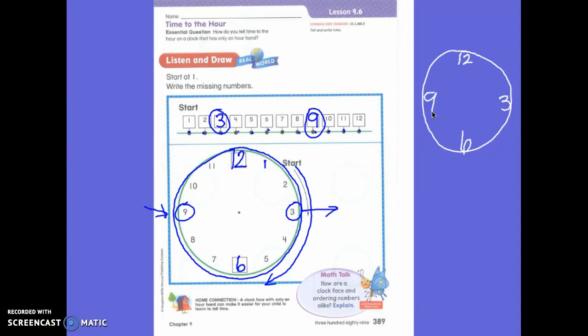So, now I've got my numbers spread out evenly. So, now I can fill in in between. What goes between my twelve and my three? One and two. What goes between my three and my six? Four and five. What goes between my six and my nine? Seven and eight. What goes between my nine and my twelve? Ten and eleven. Do you see how I can put my numbers and space them out correctly?